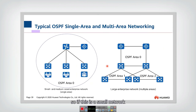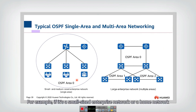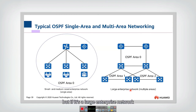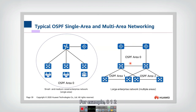Routers within one AS run the same routing protocol, while another AS may run a different routing protocol and they cannot communicate directly. There are two typical OSPF networking designs: single area and multi-area. If this is a small network — such as a small enterprise or home network — a single area is enough. But if it's a large enterprise network, then we need to construct multiple areas, for example area 0, 1, and 2, with areas 1 and 2 both connected to area 0.